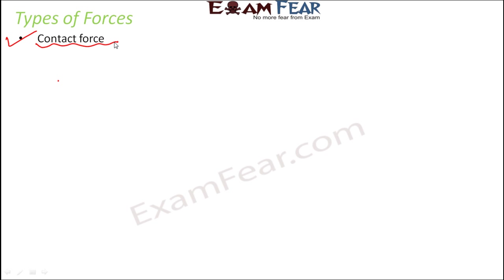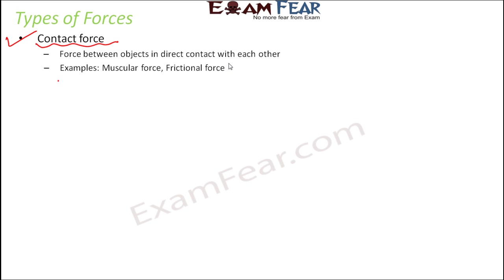The first type of force is contact force. The name itself defines it — contact means when the object is in direct contact, it is said to be a contact force. Force between objects in direct contact with each other. When we say direct contact, it doesn't mean both objects must always touch directly — they can be in contact through a third object as well. Examples include muscular force and frictional force.